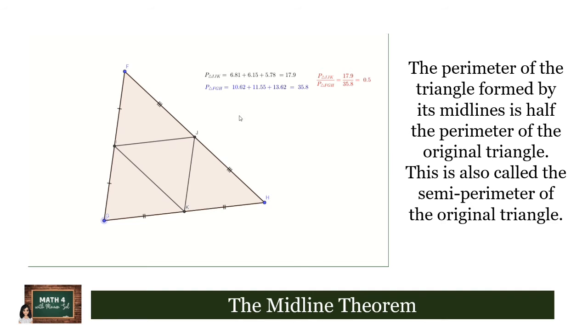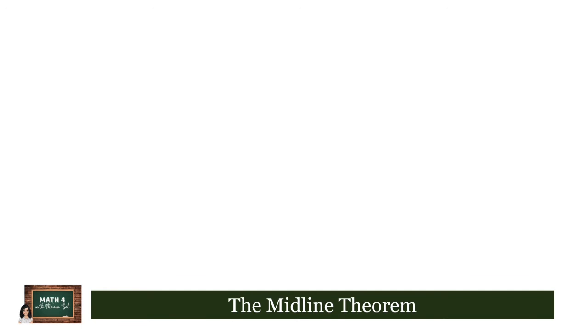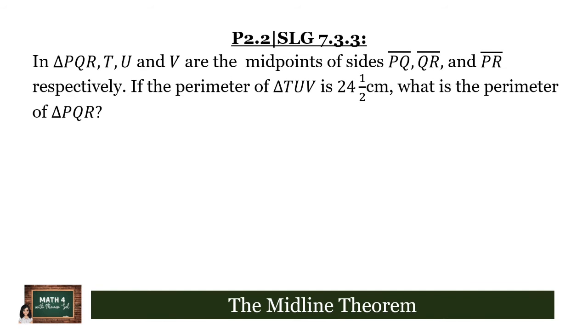We are going to use that concept to solve problem number two in your student learning guide. This problem was taken from your SLG 7.3.3. It reads: In triangle PQR, T, U, and V are the midpoints of sides PQ, QR, and PR respectively. If the perimeter of triangle TUV is 24½ centimeters, what is the perimeter of triangle PQR?